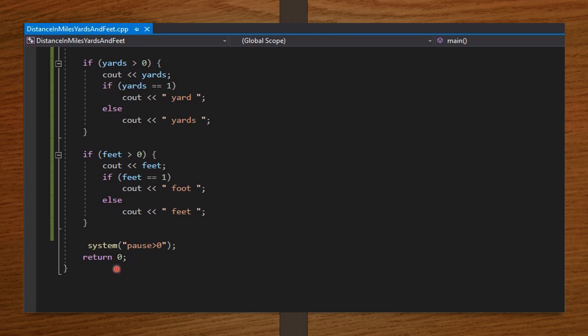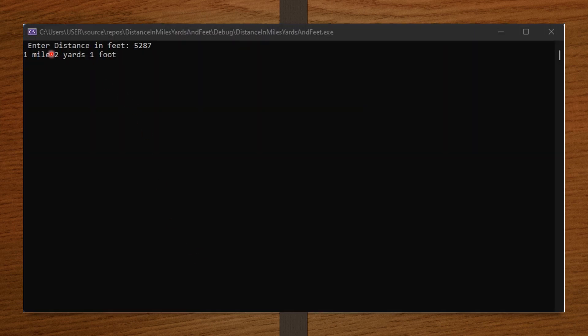So, from here, I'm going to input an integer value for distance. And then, you will see how our code will run. Enter distance in feet. So, I entered an integer value 5287 via my keyboard. And on pressing enter, it displayed 1 mile, 2 yards, 1 foot.